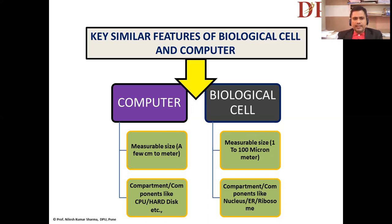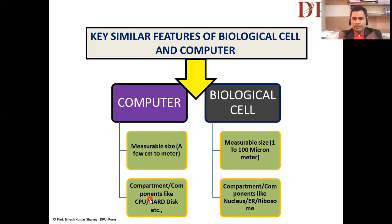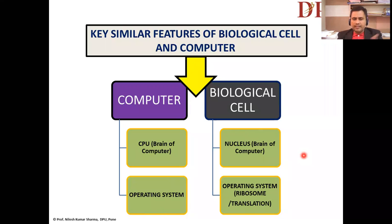The second point is compartmentalization. In the computer system, there are different components like CPUs, hard disks, and various others. Similarly, in our biological cell system there is also compartmentalization — biology students are aware of structures like the nucleus, endoplasmic reticulum, ribosomes, and so on.